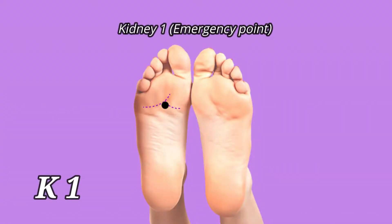Solution number two: Kidney 1, or K1. This point is located on the foot and is a very effective point for the same emergency condition — unconsciousness during a seizure. You can use a blunt object such as a pen or the back side of a pen to apply pressure to this point. Once pressure is applied, the point is immediately activated and the patient will be immediately revived.